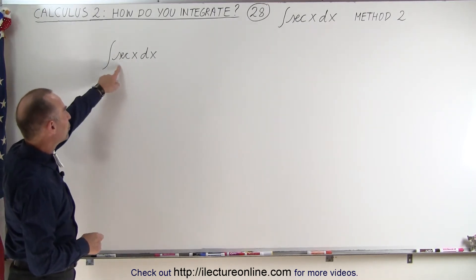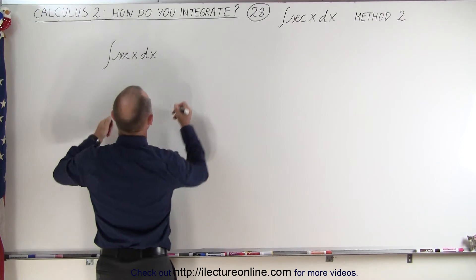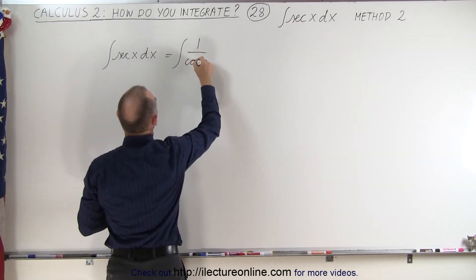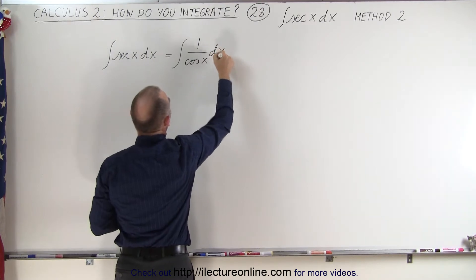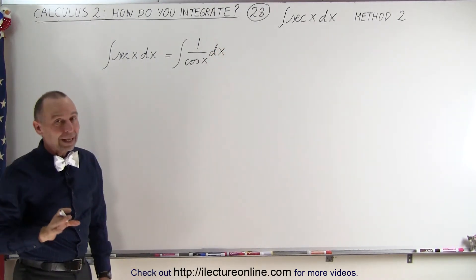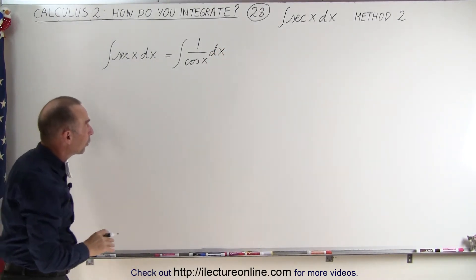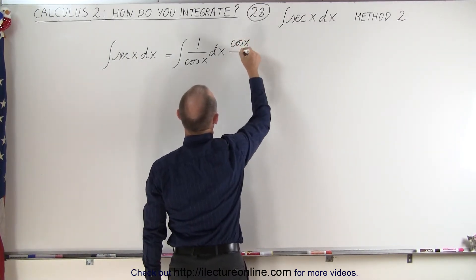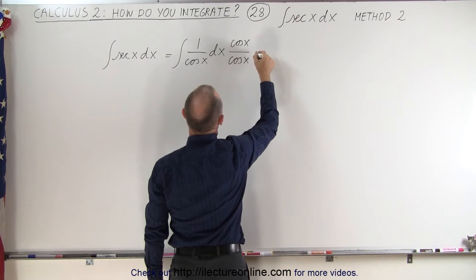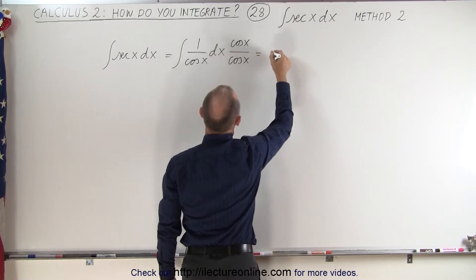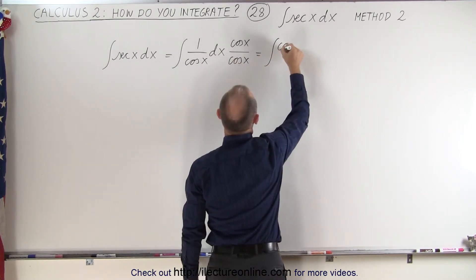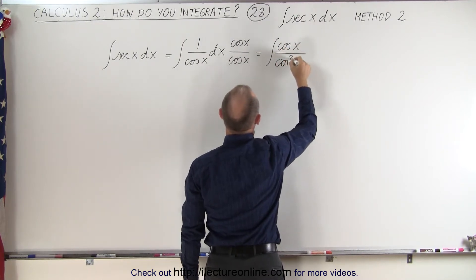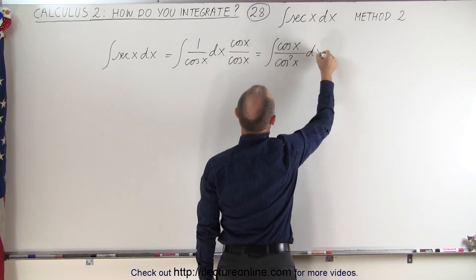First, what we're going to do is rewrite this as the integral of 1 over the cosine of x dx. Then we're going to multiply the numerator and the denominator by the cosine of x — multiply by cosine of x divided by cosine of x. This now becomes the integral of cosine of x in the numerator divided by cosine squared of x in the denominator times dx.